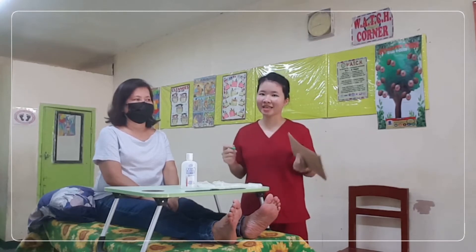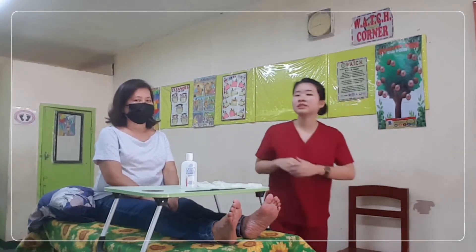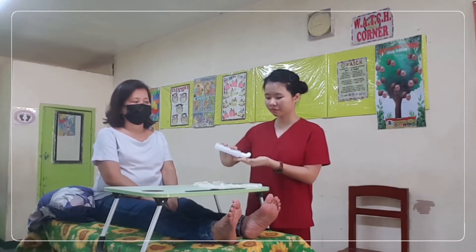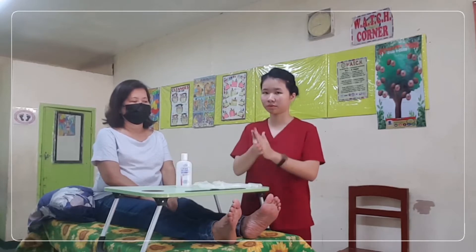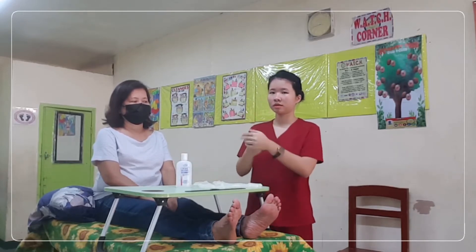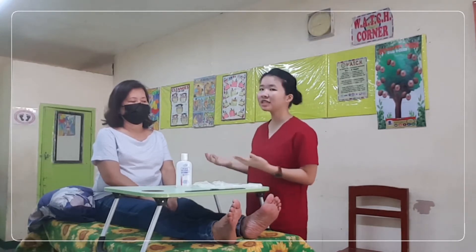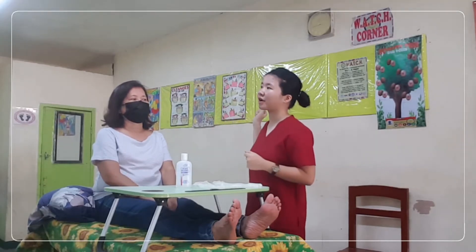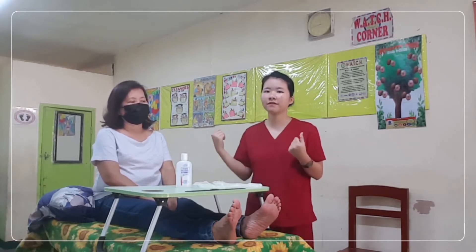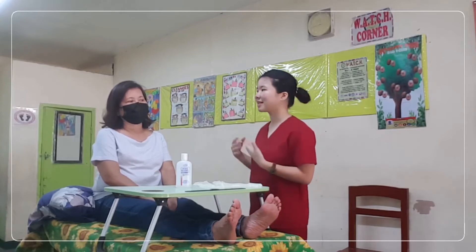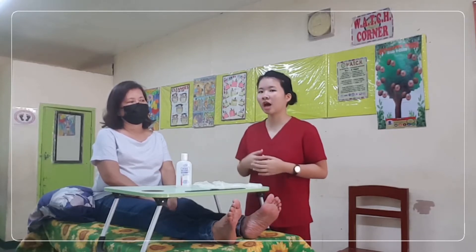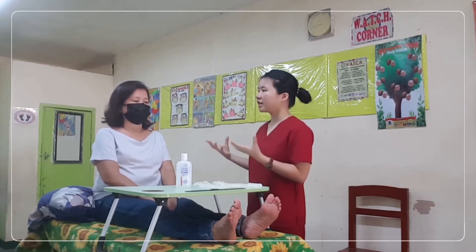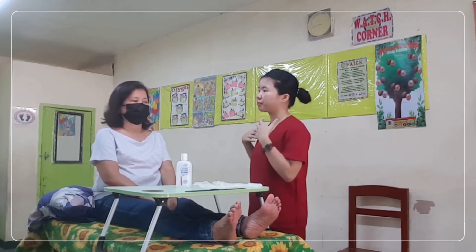Procedure number two is to perform hand hygiene. This is to prevent the spread of infection. Procedure number three is to identify the patient. This is to ensure that the right patient and the right intervention is given. Procedure number four is to close the curtain if there is any, and the door if possible, to provide comfort and security for the patient. Also assess the capabilities of the patient and how he or she can assist you in doing the procedure. This is to maintain a good rapport and relationship with your patient.